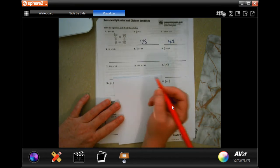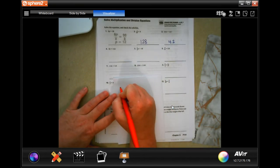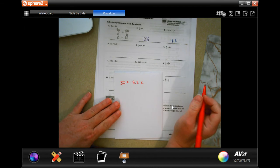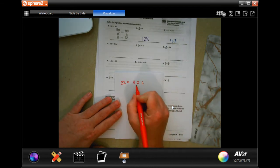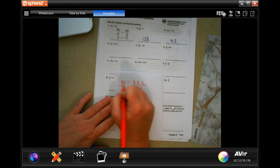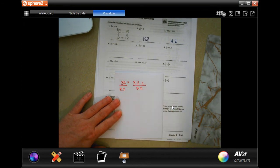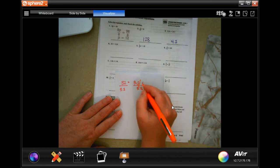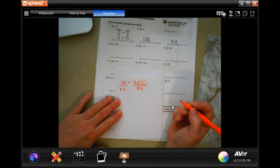This one says 32 equals 3.2C. Remember, number, letter, that means multiply. So, if we divide by 3.2 and we divide by 3.2, 3.2s cancel out and we're left with C. That's what we need.